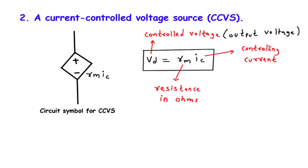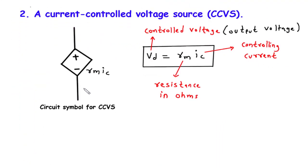In this video, we will learn about the CCVS circuit symbol and understand how the voltage across it is determined by the controlling current in another part of the circuit.